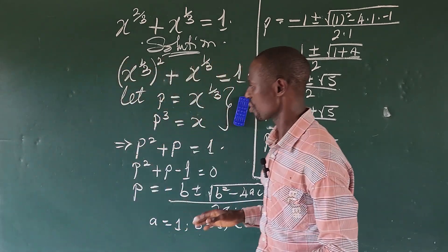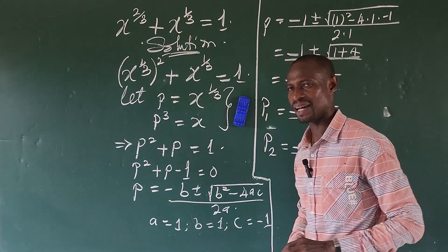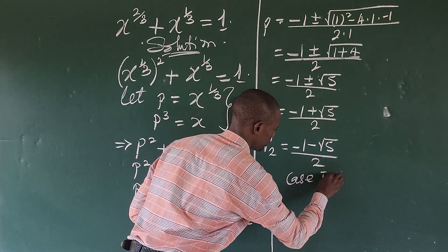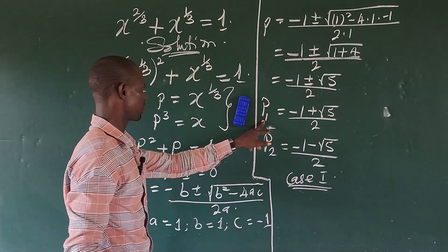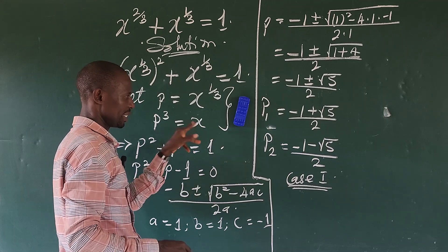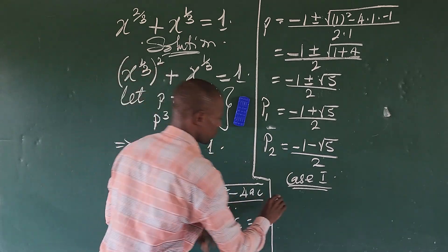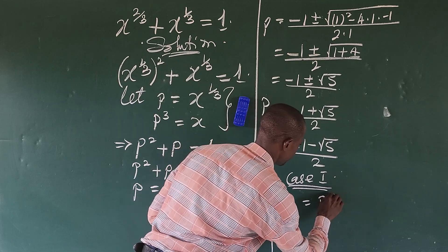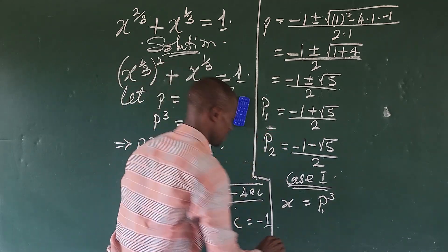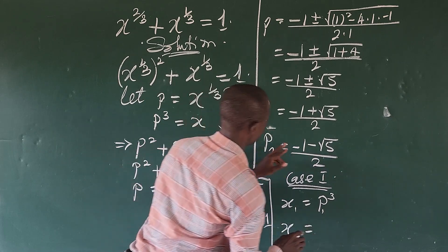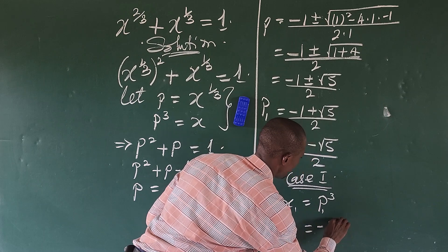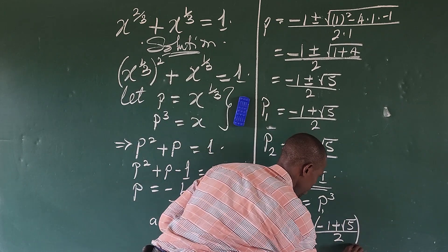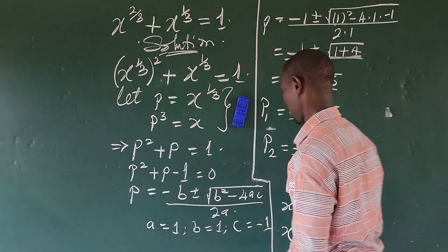Since we let p equal to x to the power of one-third, and p cubed equals x, we now find the actual value of x. For case one, we take p1. We have x1 equal to p1 to the power of three, which gives us x1 equal to the quantity negative one plus the square root of five, all over two, raised to the power of three.